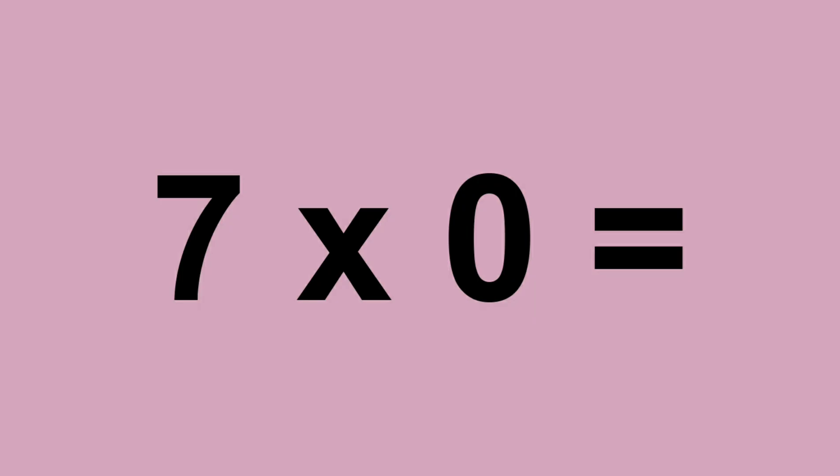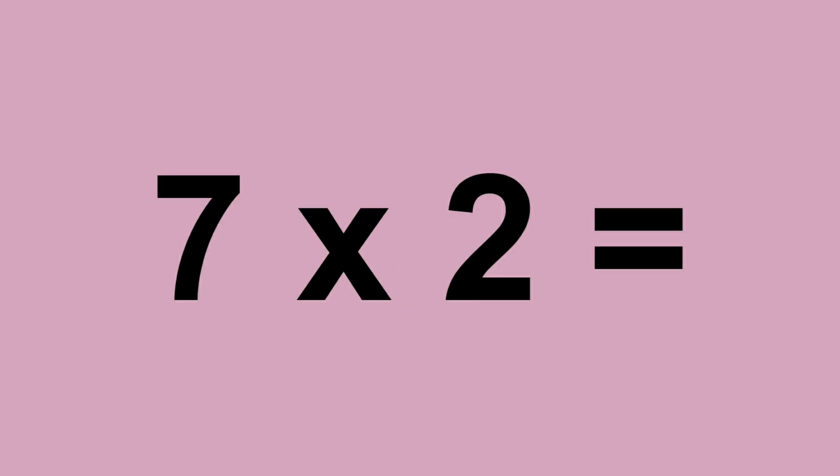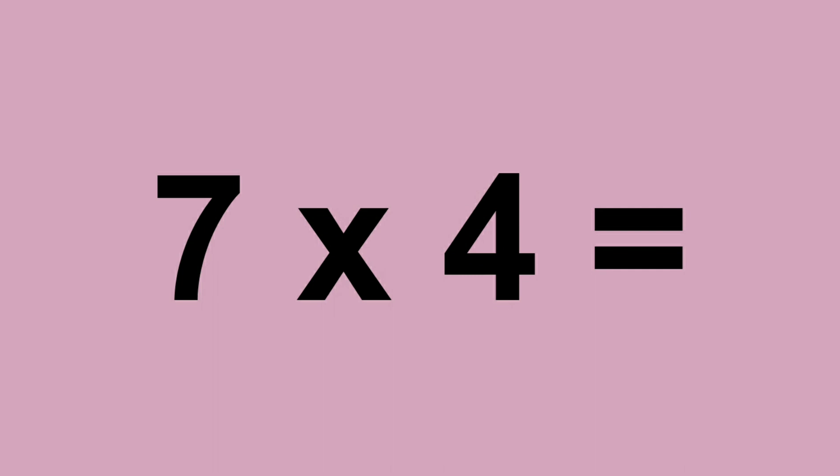7 times 0 equals 0. 7 times 1 equals 7. 7 times 2 equals 14. 7 times 3 equals 21. 7 times 4 equals 28.